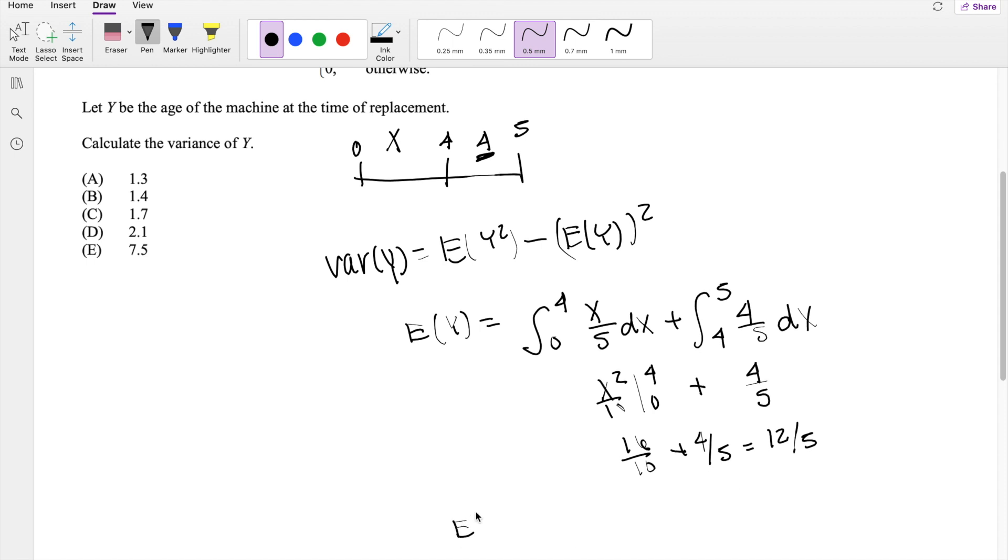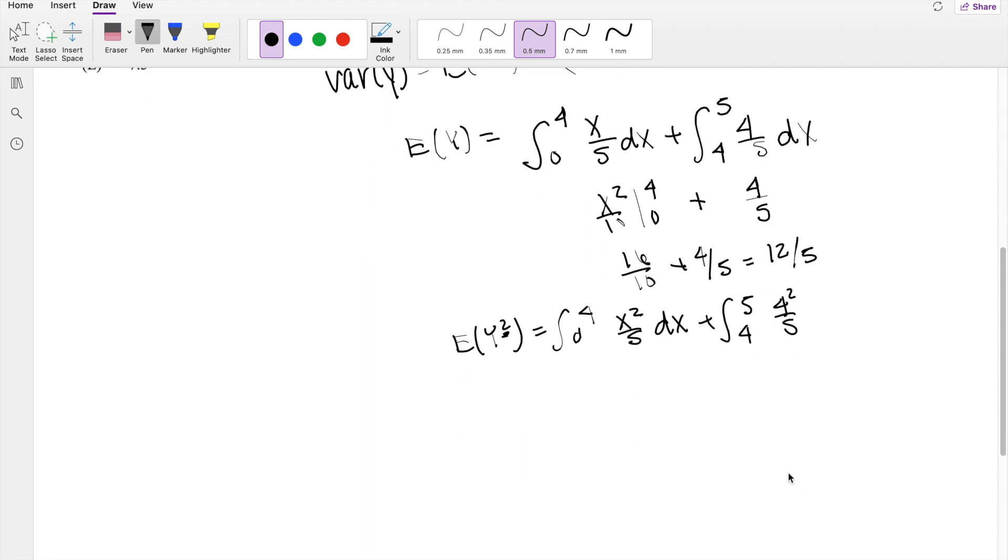Okay, the second moment, expected value of y squared. From 0 to 4 is the same, but then it's going to be y squared. So that's going to be x squared over 5 dx, plus from 4 to 5, it's going to be 4/5 again, but then it's going to be 4 squared, because it's going to be the y value squared.